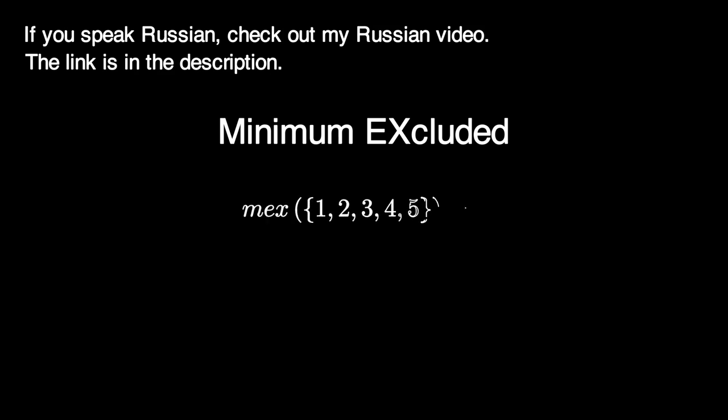Max is an abbreviation for minimum excluded, so the mex of a set is a minimum non-negative integer that isn't present in this set. For example, the mex of a set 1, 2, 3, 4, 5 is equal to 0 because there are no zeros in it, the mex of a set 0, 1, 2, 5, 10 is equal to 3,